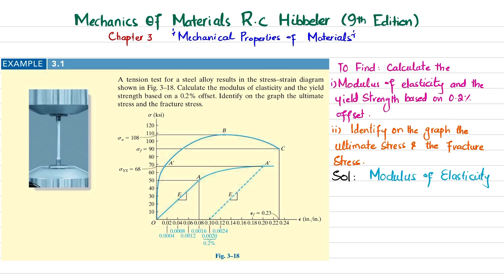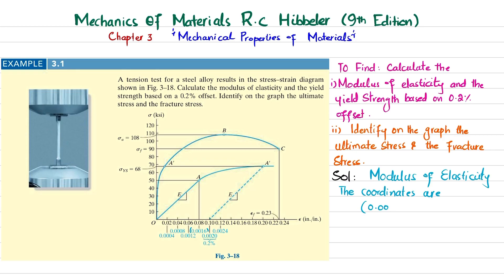This line extends from point O to an estimated point A′. This is the magnified line. The coordinates of this line are: on the x-axis the coordinate is 0.0016 (visible in blue), and on the y-axis the coordinate of line OA is 50 ksi.